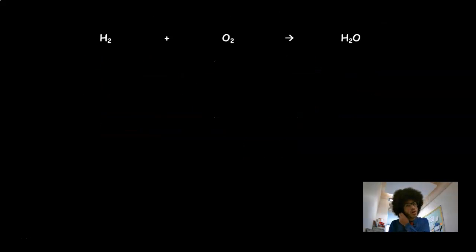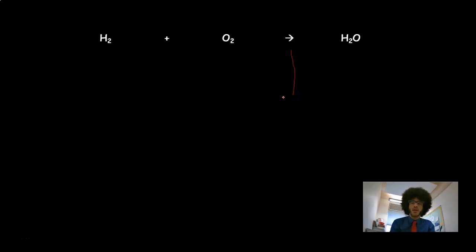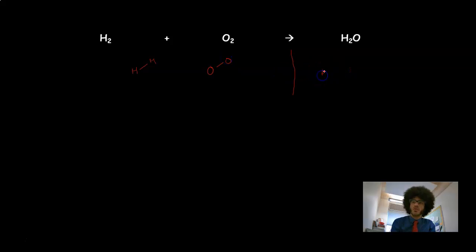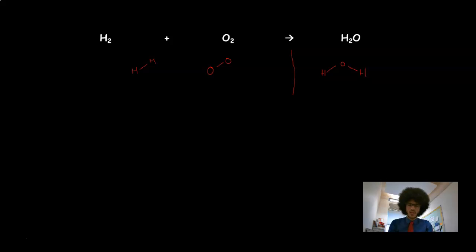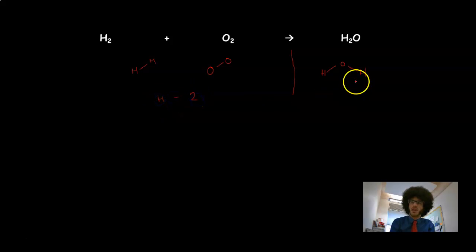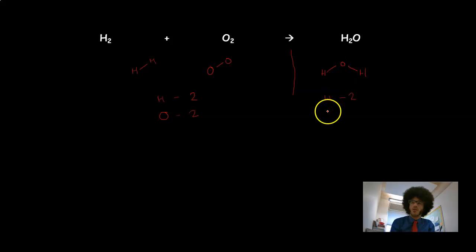The first example is H₂ + O₂ — hydrogen and oxygen reacting to create water, H₂O. To balance this, I count the number of elements on the left and right, and I'll also show pictures of what it looks like. H₂ is two hydrogen atoms bonded together, O₂ is two oxygen atoms bonded together, and H₂O is hydrogen bonded to oxygen bonded to hydrogen. Counting atoms: on the left, hydrogen = 2, oxygen = 2. On the right, hydrogen = 2, oxygen = 1.